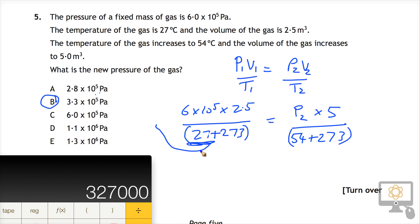As long as you remember to add in your 273 to turn the temperature from degrees Celsius to Kelvins, and then do your rearrangement correctly.